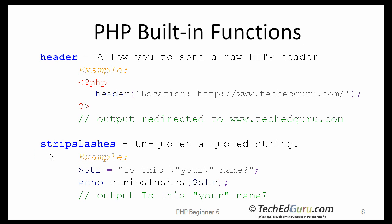Strip slashes essentially removes backslashes — specifically those added by the addslashes function. This function can be used to clean up data retrieved from a database or from an HTML form. So if this was your original string, after calling the stripslashes function, you get rid of those slashes which were used to escape the double quotes.